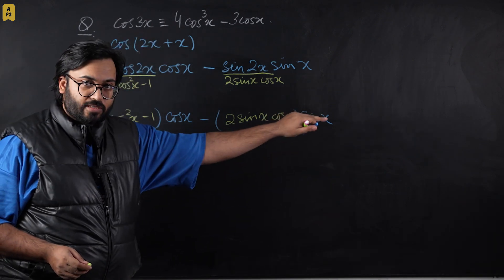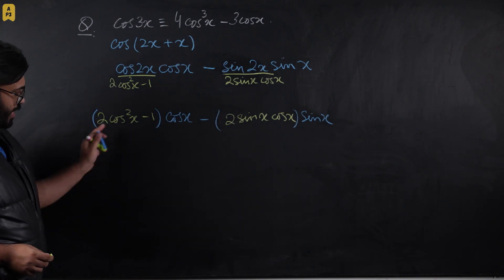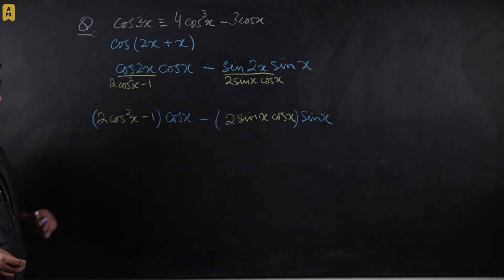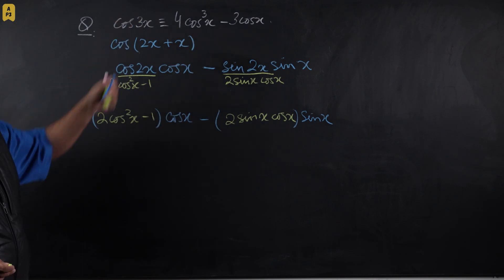You don't have to worry about the angles now. All we have to do is simplify this and show it's equivalent to 4cos³x - 3cos x.